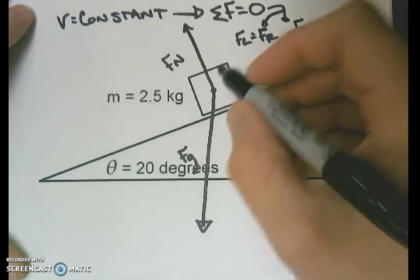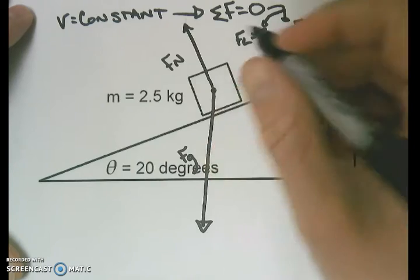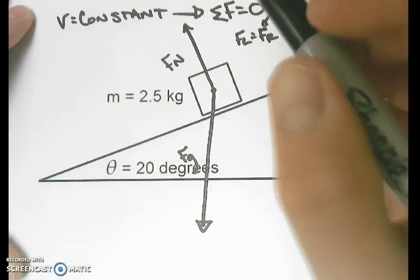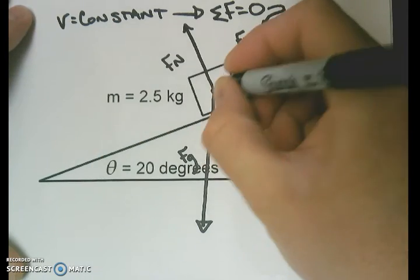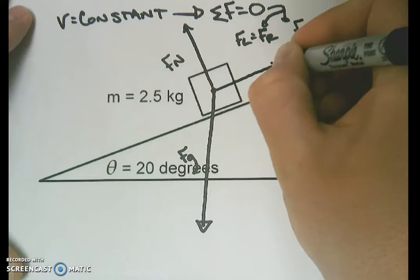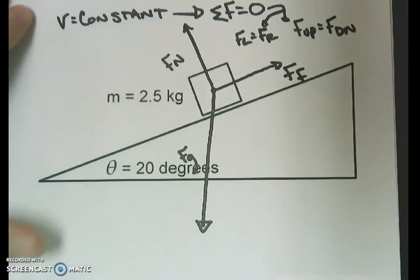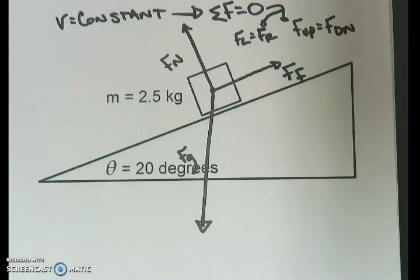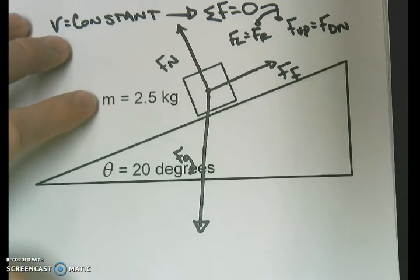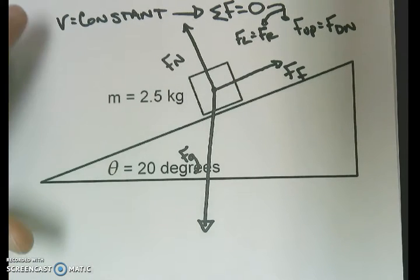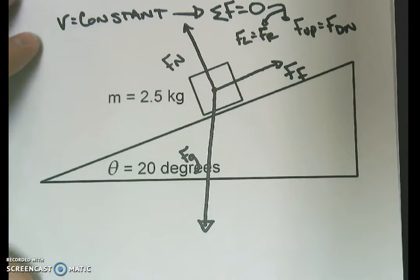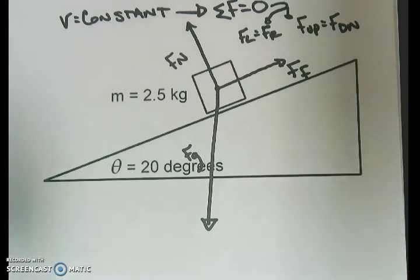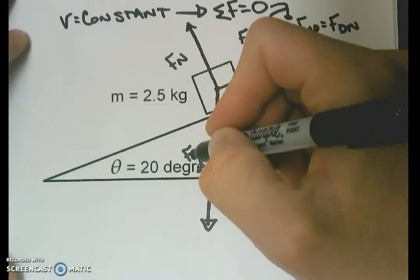The last force that we know we have present, because the velocity is constant, there has to be a force causing that constant velocity. That force is our force of friction. Seemingly, we have very little information to go off of. We were given a mass, we were given an angle, and we were told the velocity is constant. We just need to take this problem and go where it allows us to go.